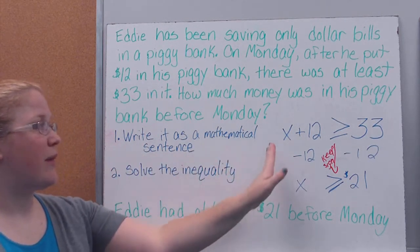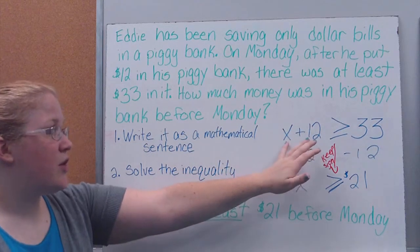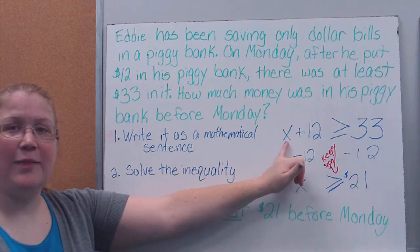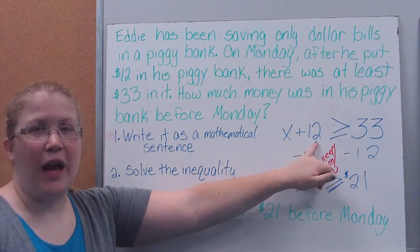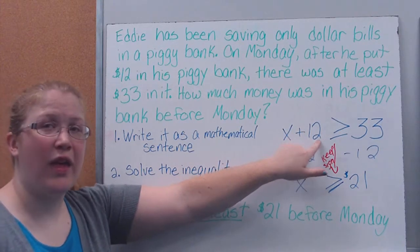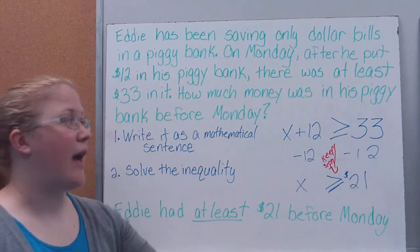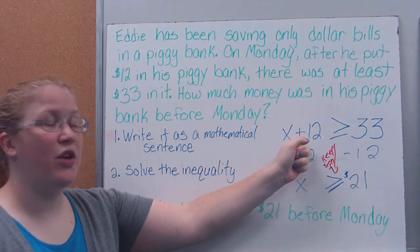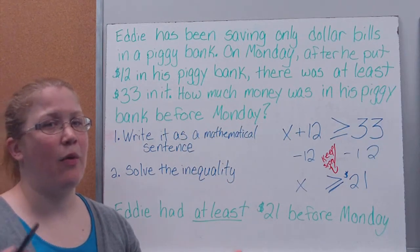So the first thing that I'm doing is I'm writing it as a mathematical sentence for an inequality written with numbers. So I don't know what he started with. That's my variable, which I like to use X for. X, he added $12. When he did this, he has a number that is greater than or equal to the $33. Because I said there was at least $33. So that means this side could be $33 or it could be more. So you really need to stop and think about which way that goes.